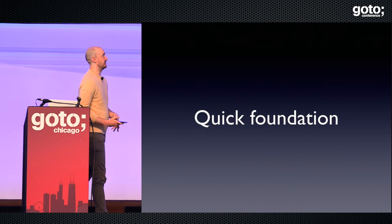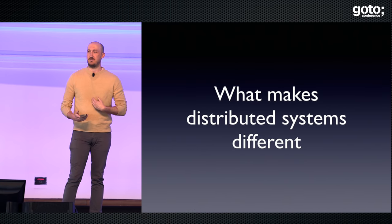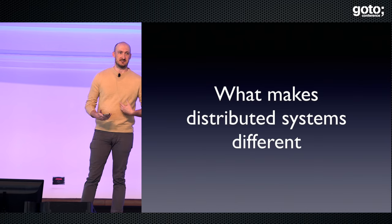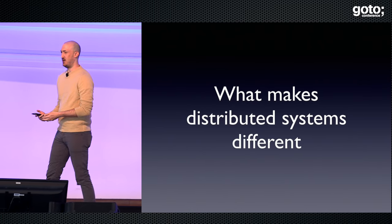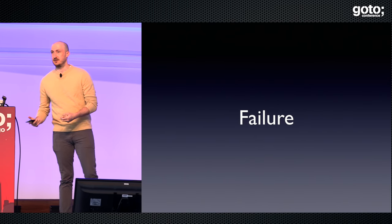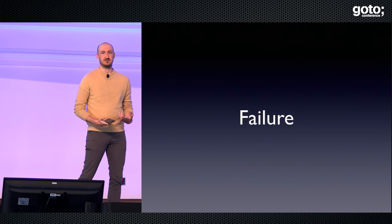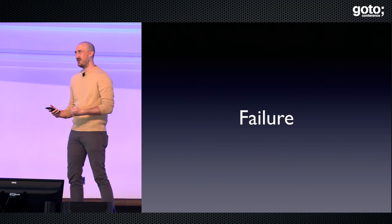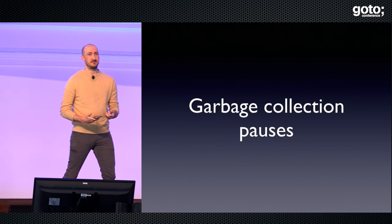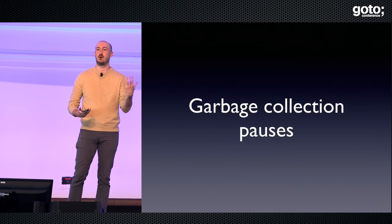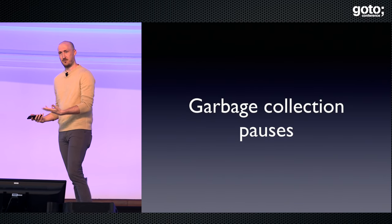We're talking about building and running distributed systems. I'll give you a quick foundation about what makes them different. When I was a little baby engineer I would say latency. But what's really different is failure. The state space of failure for distributed systems is much larger than for a single machine system. A quick subset of the kinds of failures you'll see: one is garbage collection causing just a couple of your machines to transiently go offline.